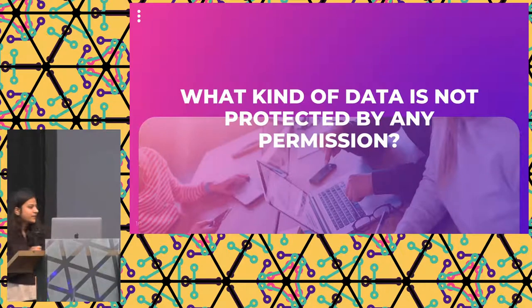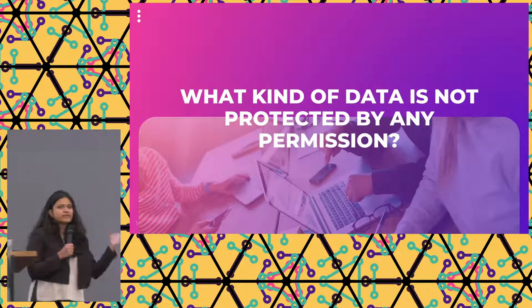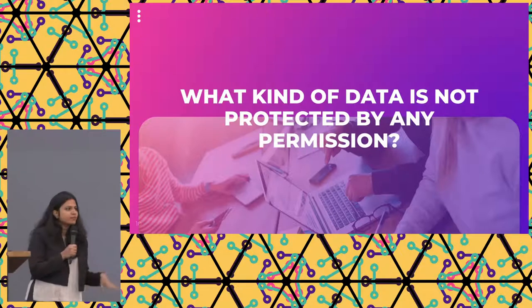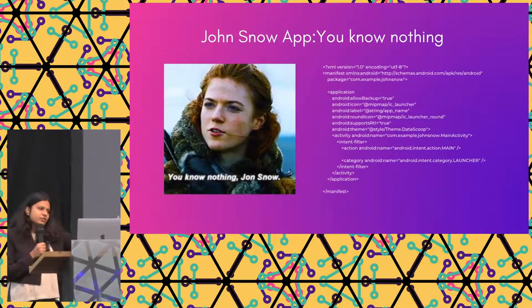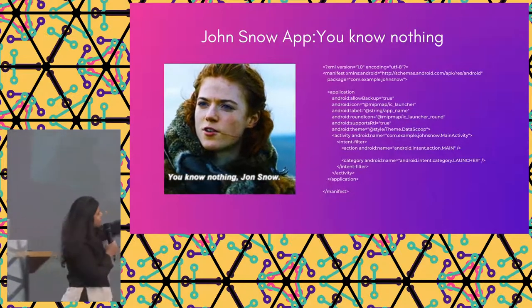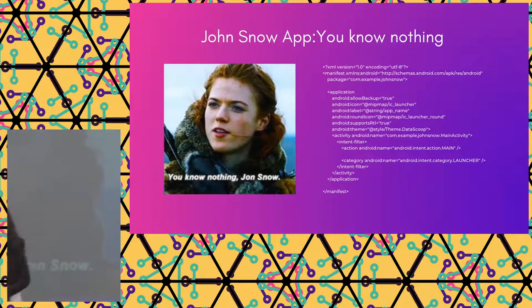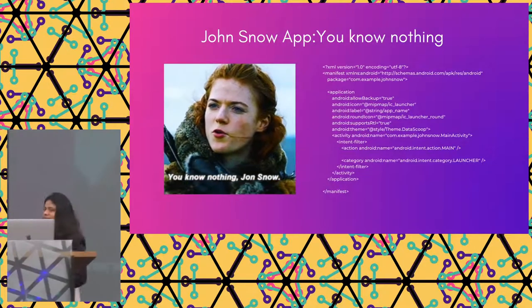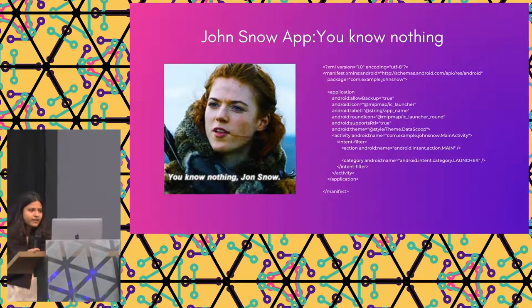I was not interested in data collected after defining permissions. I was interested in data collected without defining any permission on Android. So I created an app I called the Jon Snow app — because it knows nothing. This is the Android manifest of that app: there are no uses-permission entries at all. The whole idea was: without using any permission, what information can I extract?